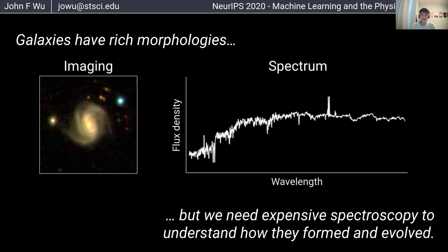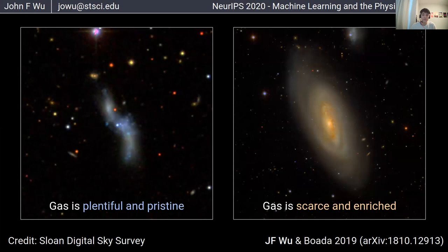Spectroscopy tells us information about new stars being formed, the variety of different elements in the interstellar gas, intense radiation fields around massive stars, and the creation of supermassive black holes. Unfortunately, spectroscopy is fairly expensive — it takes way longer than getting an image.